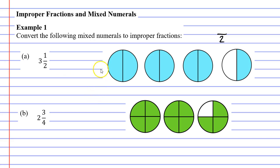If I count how many parts have been shaded in I have one, two, three, four, five, six, seven parts shaded in meaning that my numerator is seven.